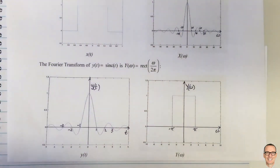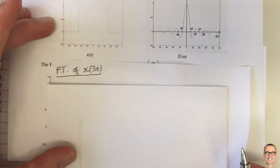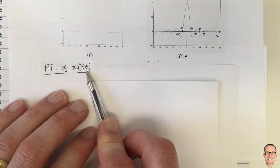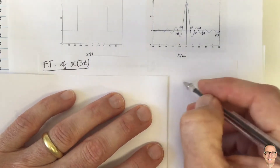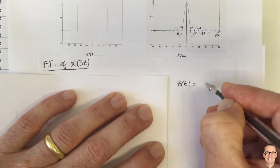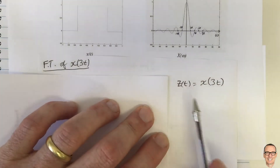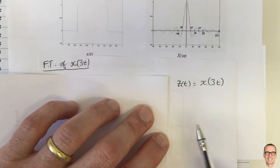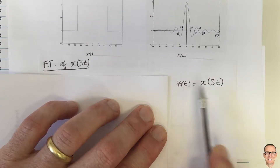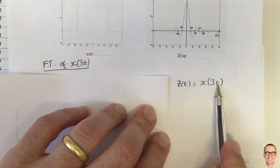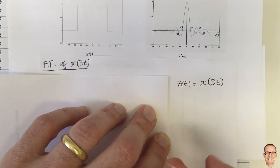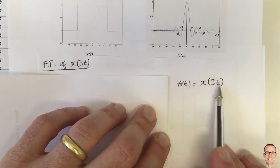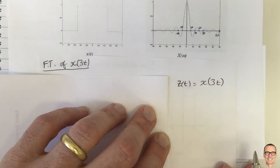Now let's consider some typical examples. We're asked to plot the Fourier transform of x(3t). Let's define z(t) = x(3t). This is a compression in the time domain, because whatever happens at t in z corresponds to 3 times that position in x. So we're compressing x, and therefore it's an expansion in the frequency domain.